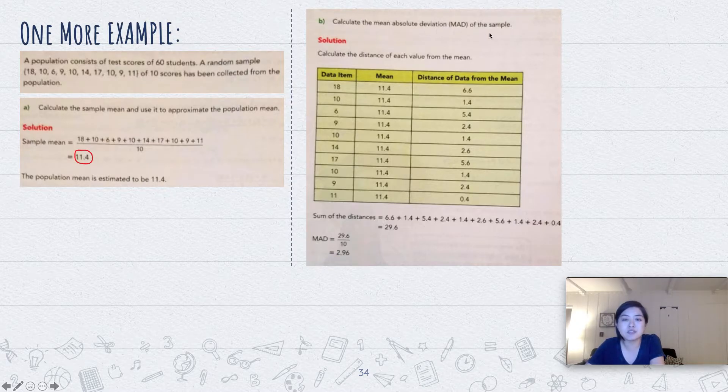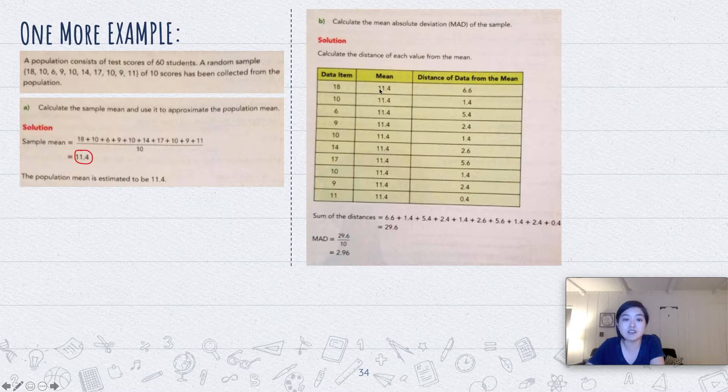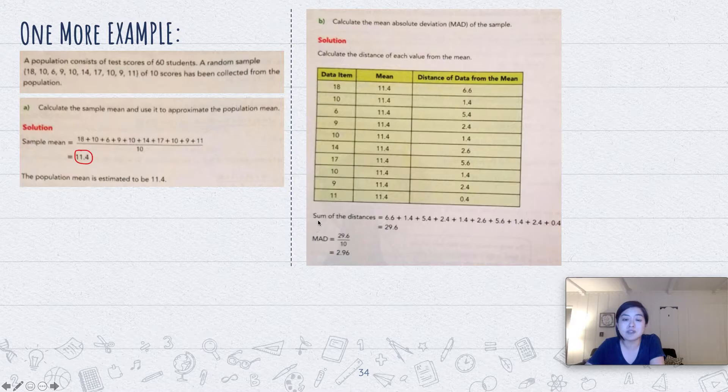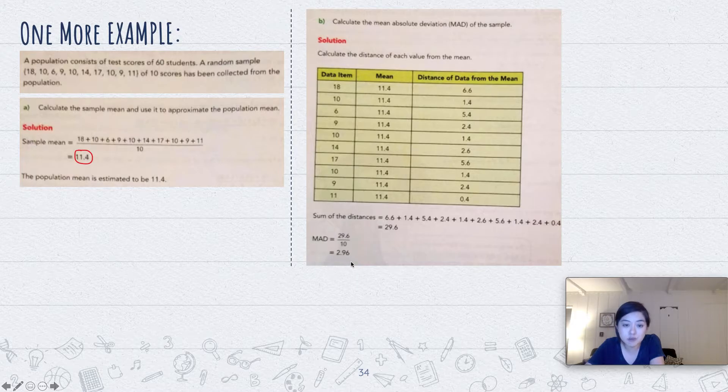Then it says calculate the mean absolute deviation. So we write the data items here, we write the mean here, we write the distance from the mean, so just subtract the bigger number minus the lower number and you get these values here. And then to find the mean absolute deviation, you need to take the sum of the distances in the numerator and then divide by the total number of items, put that in the denominator 10, and you get 2.96.